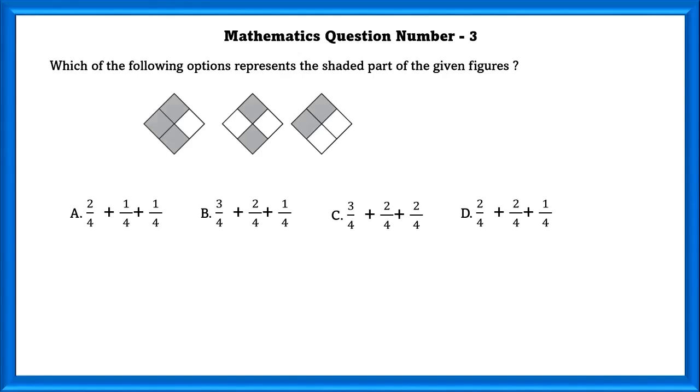Mathematics Question Number 3: Which of the following options represents the shaded part of the given figures? This figure is 3 by 4 fraction. This figure is 2 by 4 and this figure is 2 by 4. The C option represents this.